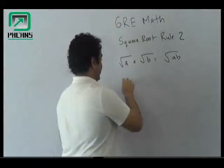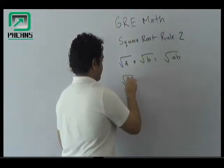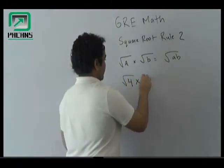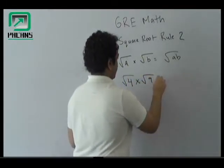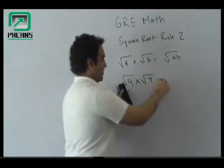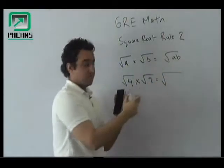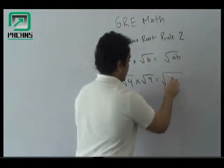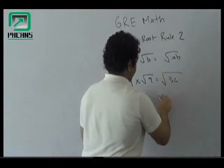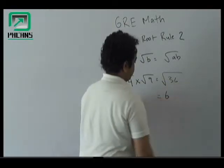So if I suppose some numbers — under root 4 times under root 9 — you put the under root and can multiply these two. So it would be under root 36, which will ultimately be 6.